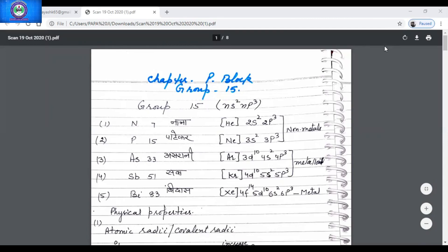The general electronic configuration of the elements present in this block is ns2 np1 to 6. This means that the atoms of all these elements have completely filled s subshell while the electrons are filled in the p subshell of the valence shell.